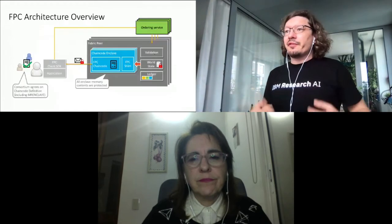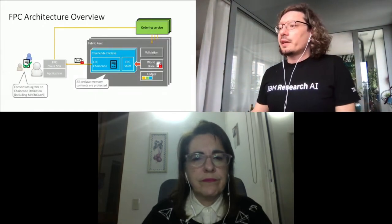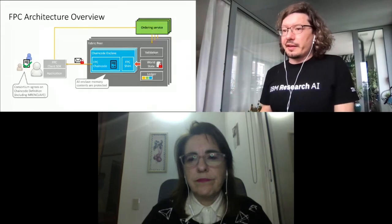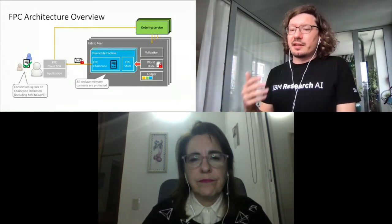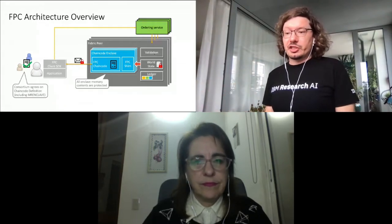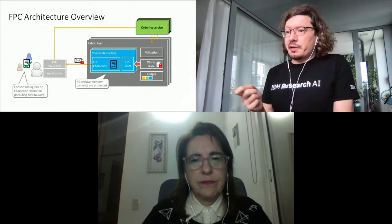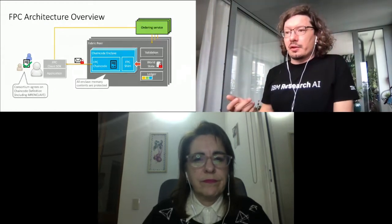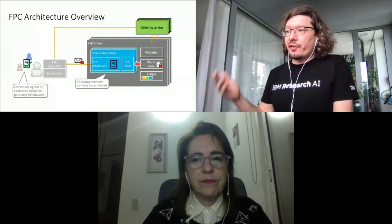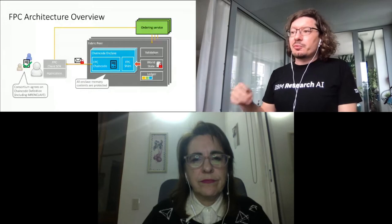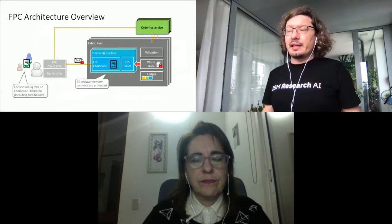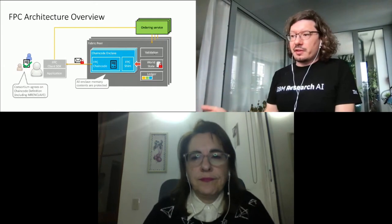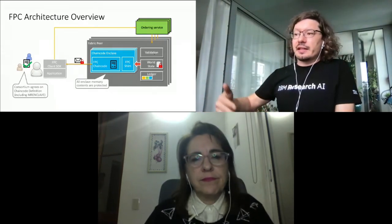Let's have a brief look at how the architecture of Fabric Private Chaincode looks. On the right side, we see a bunch of peers, an ordering service, and a couple of clients. The clients are part of an organization, and together the consortium agrees on the chaincode definition, which includes, with Fabric Private Chaincode, the code identity of the chaincode executed inside the enclave — in SGX language, this is also called MR enclave. Then a chaincode enclave on the peer is spawned, provisioned with the FPC chaincode, which is then executed securely and isolated from the endorsing peer, which cannot access the code and data inside the enclave.